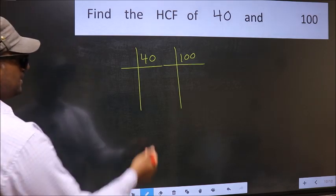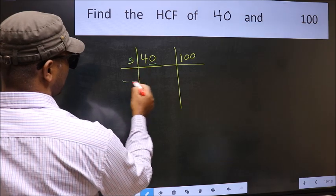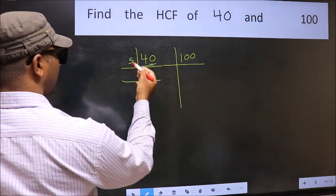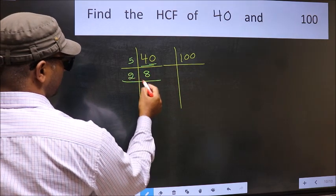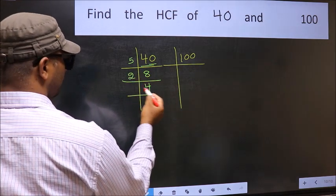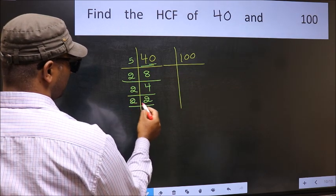Next, in this number, last digit is 0, so take 5. When do we get 40 in the 5 table? 5 times 8 is 40. Now 8: 2 times 4 is 8. 4: 2 times 2 is 4. 2 is a prime number, so 2 times 1 is 2.